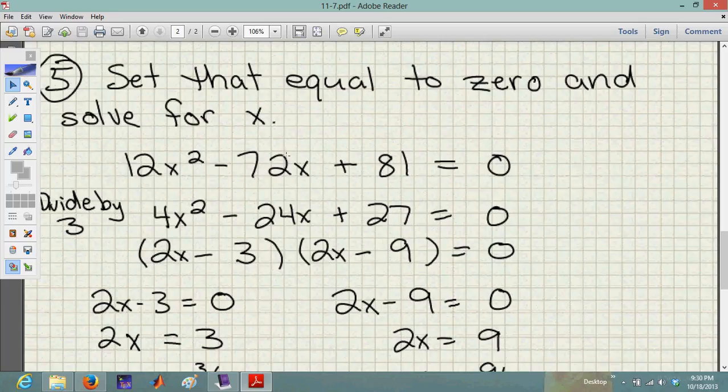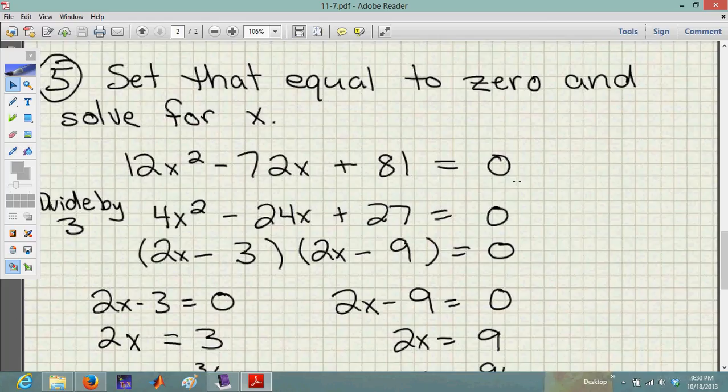So, 12x squared minus 72x plus 81 equals 0. Do you want to work with those big numbers? I don't want to work with those big numbers. I'm going to make that as small as I possibly can. So I'm just going to divide both sides of this by 3. I divided that by 3, that gave me 4x squared. I divided this by 3, that gave me negative 24x. And I divided this by 3, and that gave me 27. And if I divide 0 by 3, I get 0.